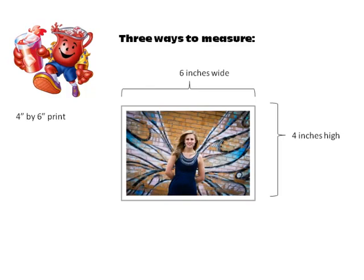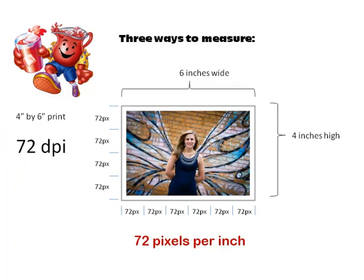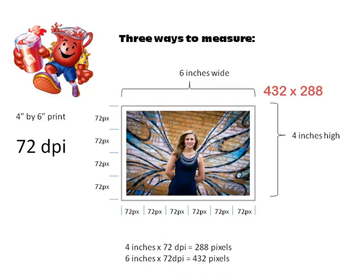Let's talk about resolution a little more. Here's a photograph — it's a 4x6 print, 6 inches wide and 4 inches high. If we have a photograph that's 72 dpi, or dots per inch — sometimes you'll see ppi, pixels per inch — that means each inch is divided into pixels. In this example, every inch holds 72 pixels in length and 72 pixels in height. So for a 4x6 print: 4 inches times 72 dpi equals 288, and 6 inches times 72 dpi equals 432. This image at 72 dpi is only 432 by 288 pixels.